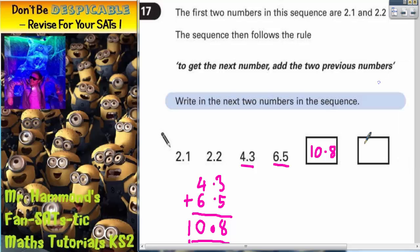For the second box, again we've got to add the two previous numbers. For this box, the two previous numbers are the 10.8 and the 6.5. So we do need to use the 6.5 again. So it's 10.8 add 6.5.